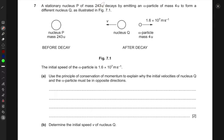A stationary nucleus P of mass 243u decays by emitting an alpha particle of mass 4u to form a different nucleus Q as shown in the figure. We have nucleus P sitting at rest, then it decays by emitting an alpha particle in the right direction. The nucleus turns into Q and goes in the left direction after the decay. The initial speed of the alpha particle is given as 1.6 × 10^7 m/s, moving to the right.